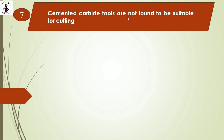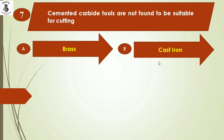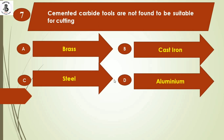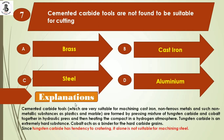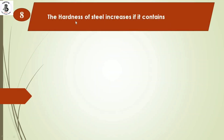The next question: cemented carbide tools are not found suitable for cutting option A) brass, option B) cast iron, option C) steel, option D) aluminum. Cemented carbide tools are formed by pressing tungsten carbide and cobalt together and sintering in a hydrogen atmosphere. Tungsten carbide is extremely hard, making it difficult to cut steel materials. The right answer is option C.